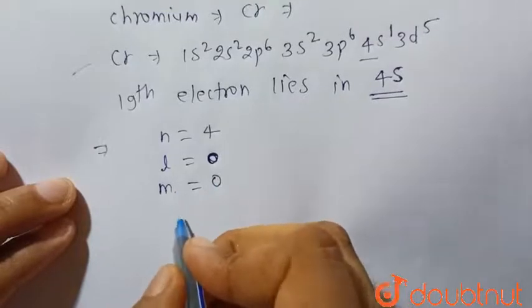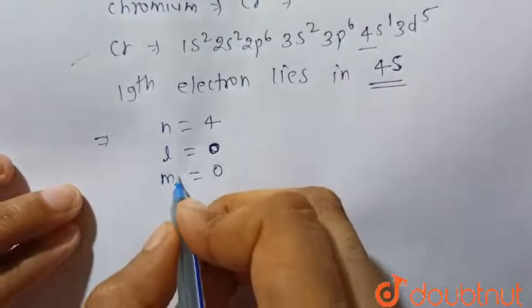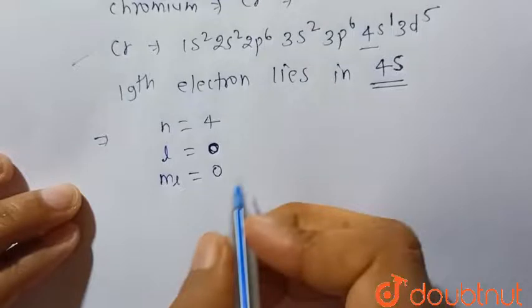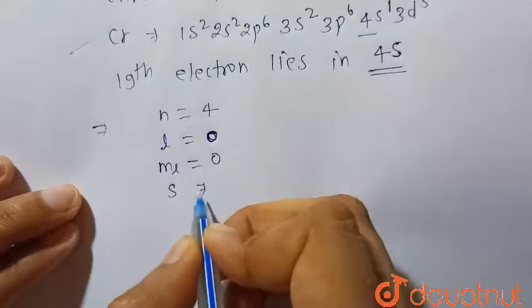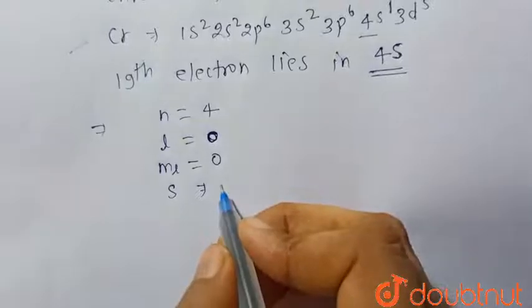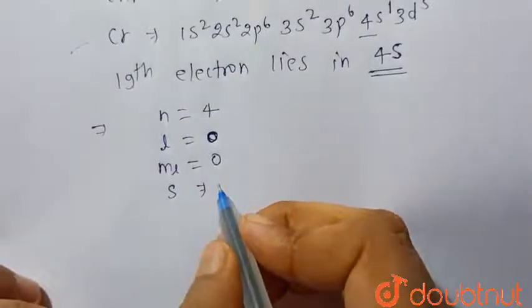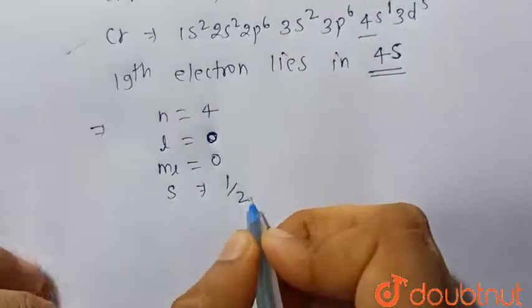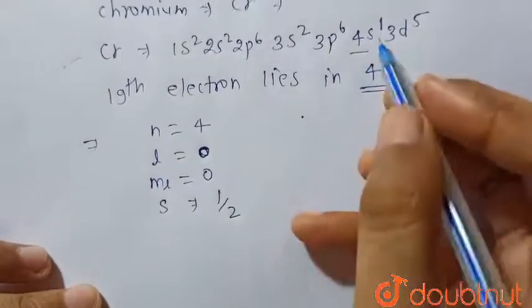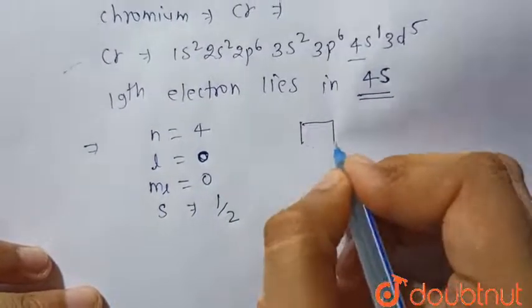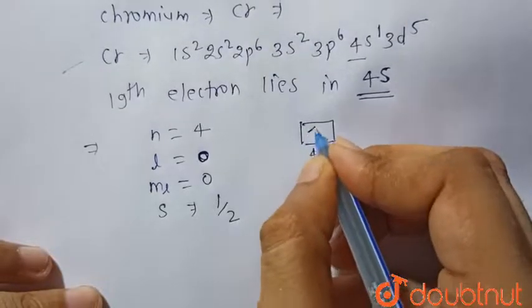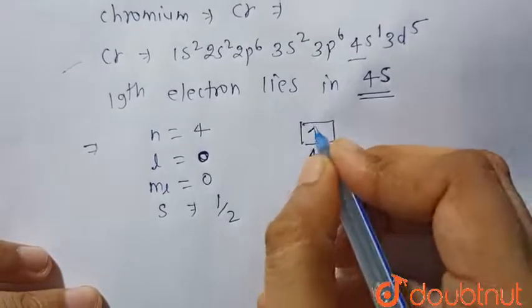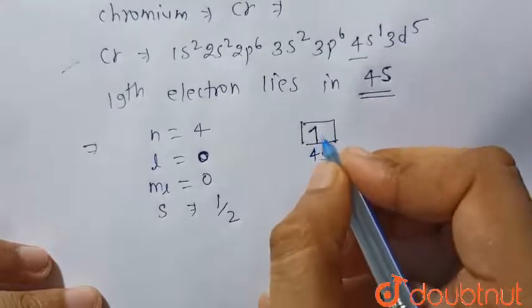ml is the magnetic quantum number. Now s, that is spin quantum number, will be +½ because in the 4s orbital there is one electron.